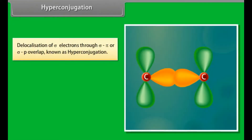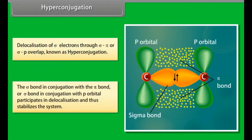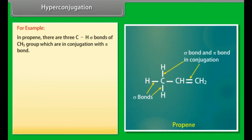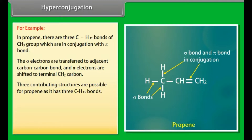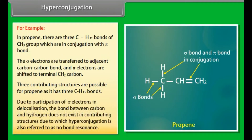Hyperconjugation. Delocalization of sigma electrons: a sigma bond in conjugation with a pi bond, or a sigma bond in conjugation with a p orbital, participates in delocalization and thus stabilizes the system. For example, in propene, the three C-H sigma bonds of the CH3 group are in conjugation with the pi bond. The sigma electrons are transferred to the adjacent C-C bond and the pi electrons are shifted to the terminal CH2 carbon. Three contributing structures are possible for propene. Because the bond between carbon and hydrogen does not exist in contributing structures, hyperconjugation is also referred to as no-bond resonance.